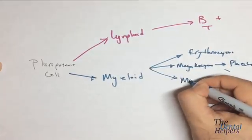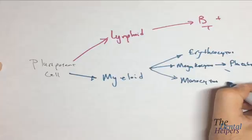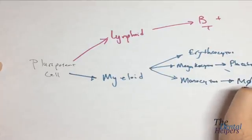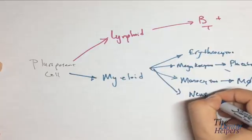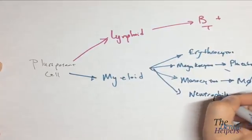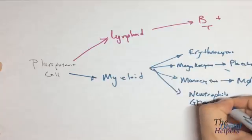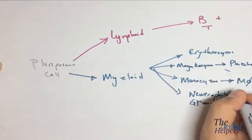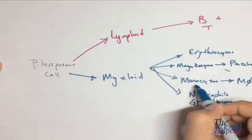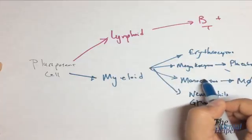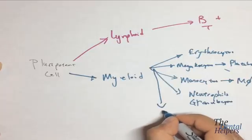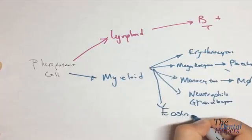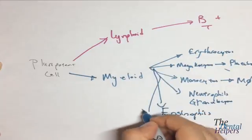Next, we have our monocytes, and they become our macrophages, and this is going to be the killing cells. We have our neutrophils and our granulocytes, and these guys are involved in inflammation. I should have said monopoiesis, the process itself is monopoiesis. Monocytes are the result of monopoiesis. And then lastly, we have granulocytes. Sorry, there's two things actually. We have eosinophils and lastly, basophils.